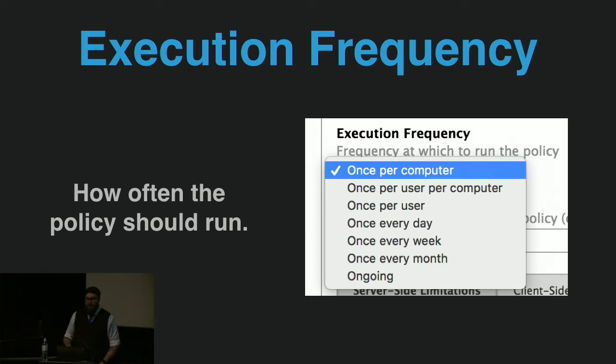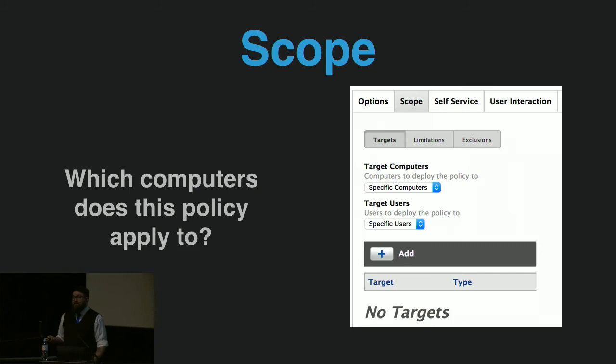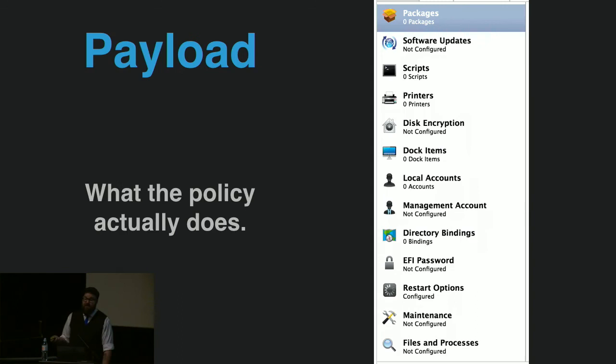Equally important is scope — we have to tell Jamf Pro what computers this policy applies to. By default there is no scope, so if your policy is not running on any computers, this is the first thing you want to check. The final thing you need is a payload — this is what the policy actually does, whether it's installing a package, running a script, creating a user account, or working with file encryption.